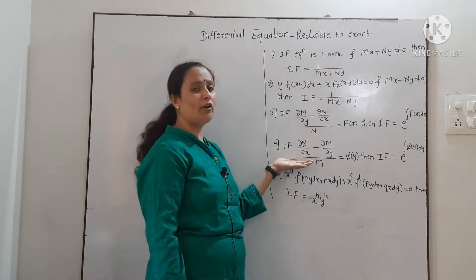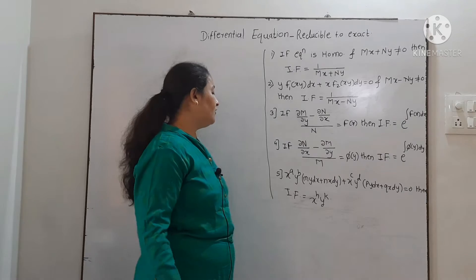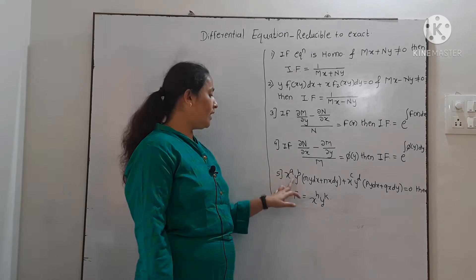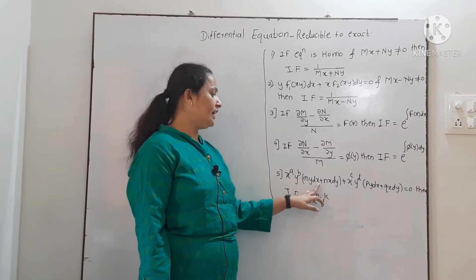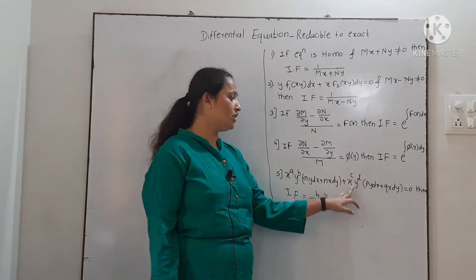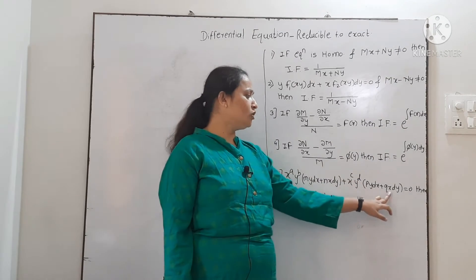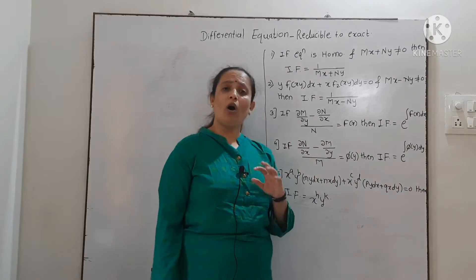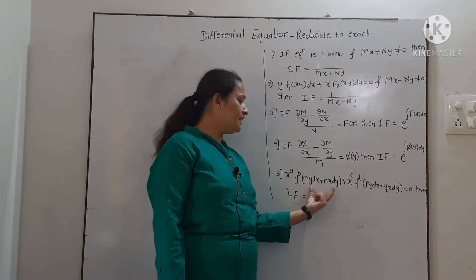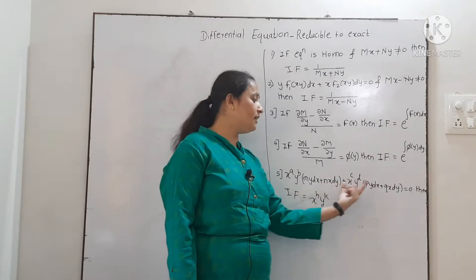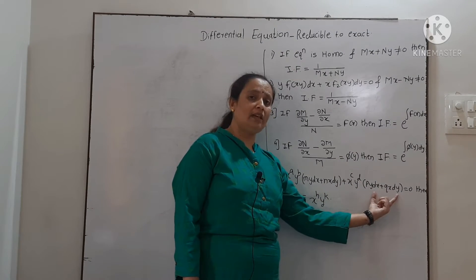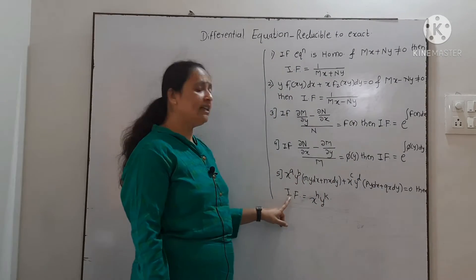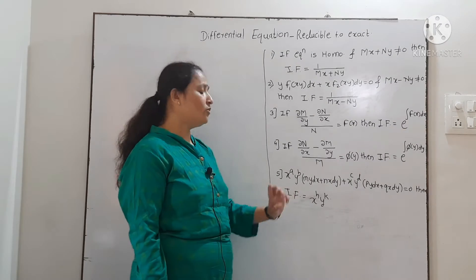If all these 4 rules are not applicable, we will go for the 5th rule. In the 5th rule, if you are able to arrange the given differential equation in the form x^a · y^b (my dx plus nx dy) plus x^c · y^d (py dx plus qx dy) equal to 0 — where a, b, c, d, m, n, p, q are all constants — and importantly inside each bracket we want y dx plus x dy, then the integrating factor will be x^h · y^k.